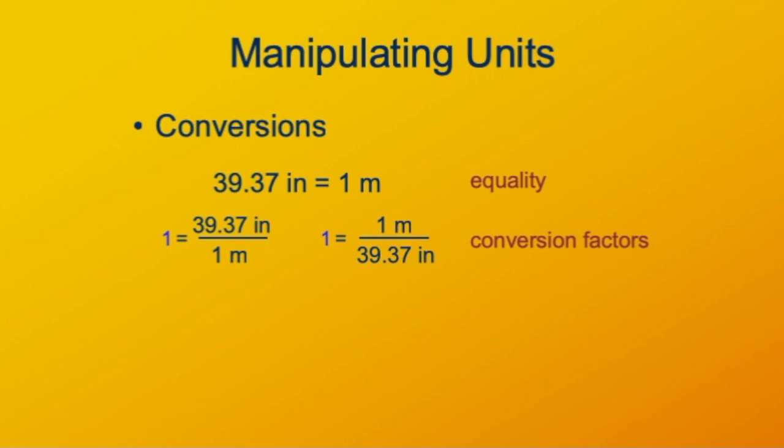Since anything divided by itself is one, either side of the equality divided by the other side gives us one. 39.37 inches per one meter is one, or one meter per 39.37 inches is one. These expressions of one are our conversion factors. Which one of these we want to use depends on what we have and on what we want. So let's say we start with a distance of 72 inches, which we want to express in meters. If we multiply this quantity by one, certainly we haven't changed anything. It's still the same quantity.